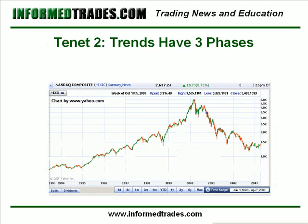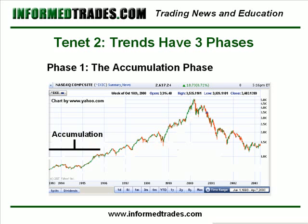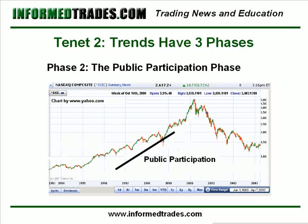Tenet two is that trends have three phases. Probably the best example is a longer-term chart of the NASDAQ showing the run-up into 2000. The first phase is the accumulation phase, when the expert traders are actively taking positions which are against the majority of traders. The next phase is the public participation phase, where the public at large catches on to what the experts know and begins trading in the same direction — often you see a pretty rapid price increase during this time.